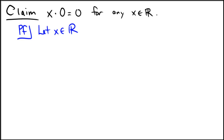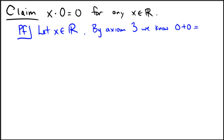By Axiom 3 — the one about the existence of the additive identity element — we know that 0 plus 0 is equal to 0, because that axiom says that anything plus 0 equals that same thing. That's Axiom 3 from the field properties.